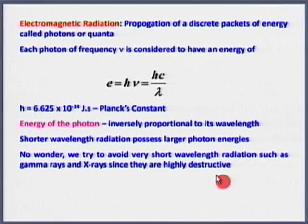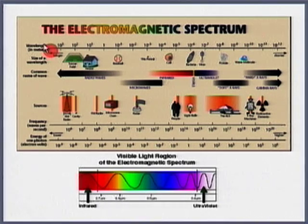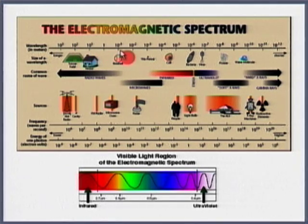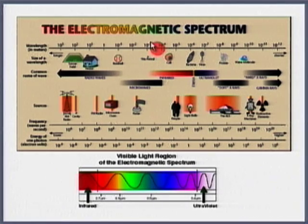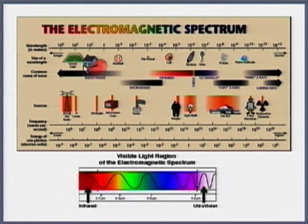The electromagnetic spectrum spans from radio waves (wavelength ~100 m, football-ground scale) through microwaves, infrared, visible light, ultraviolet, x-rays, to gamma rays. Shorter wavelengths correspond to higher energies. Visible light ranges from red (larger wavelength, visible from far) to violet. Microwaves and infrared have wavelengths from about 10⁻³ to 10⁻⁷ m (full stop to amoeba size).